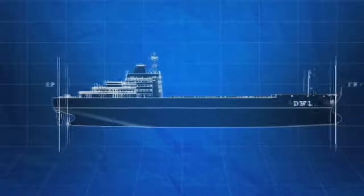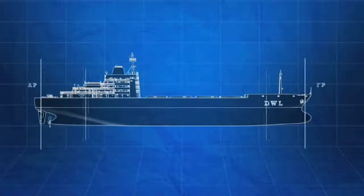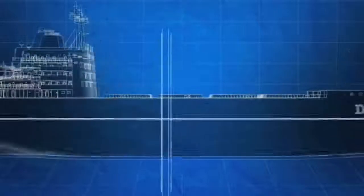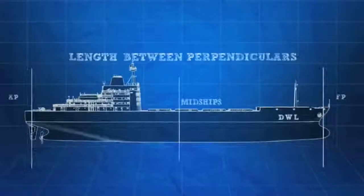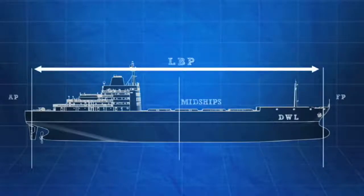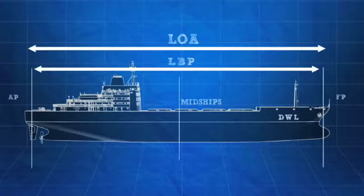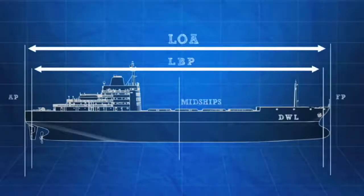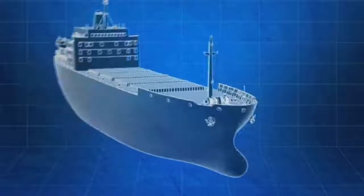For most commercial vessels, this is generally where the rudder post is located. Midships is the horizontal point halfway between the forward and aft perpendiculars, and the length between perpendiculars, or LBP, is the total horizontal distance between the forward and aft perpendiculars. Length overall, or LOA, is the total length of a ship at its longest point. Note that this may be a little longer than the LBP because a ship can extend slightly past the perpendiculars.